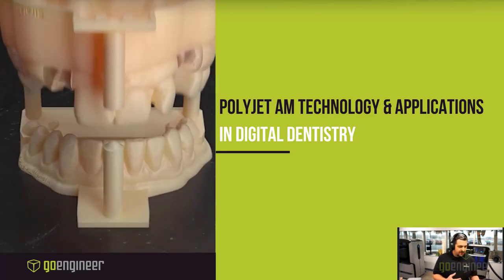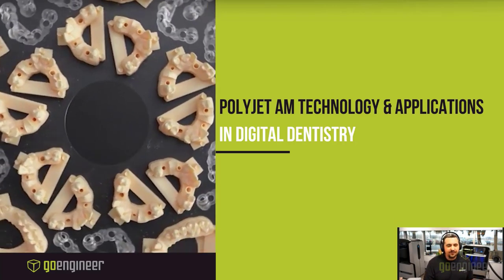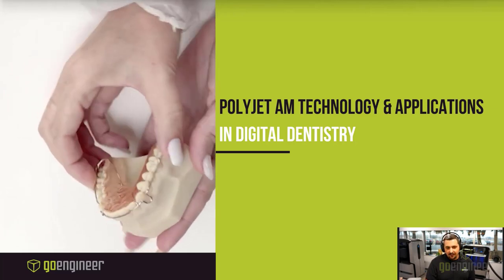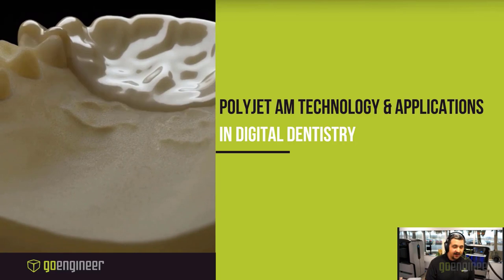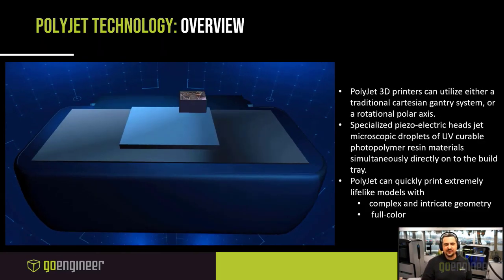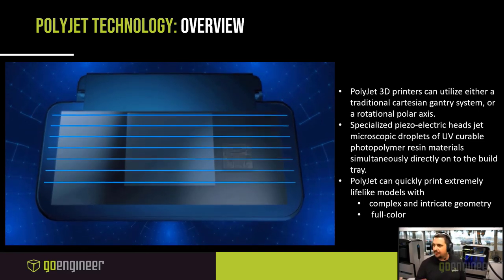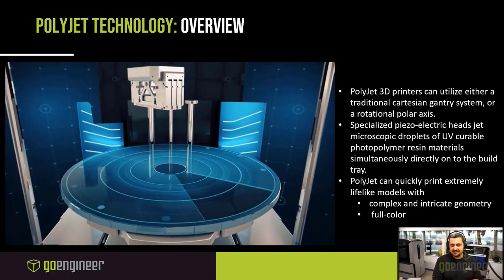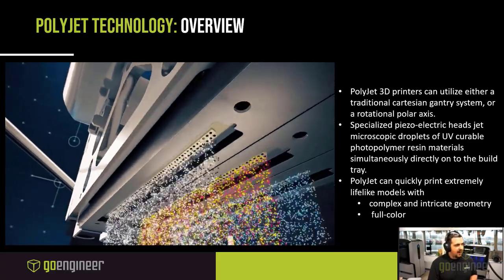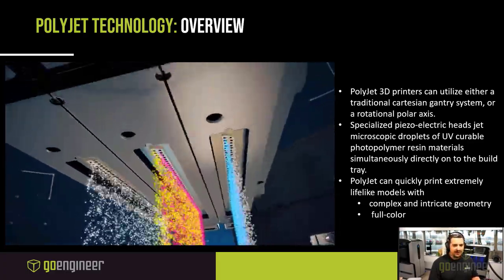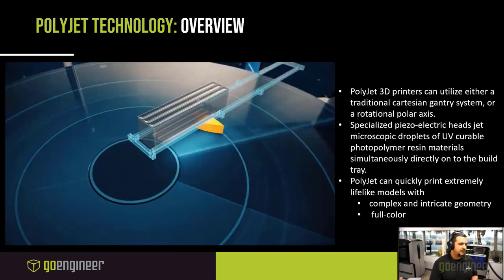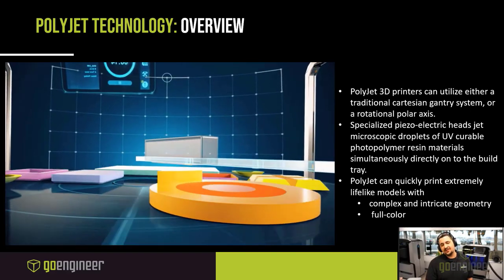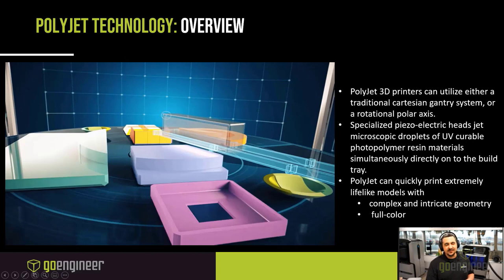PolyJet 3D printers can utilize either a traditional Cartesian gantry system or a rotational polar axis. The J5 DentaJet and all PolyJet systems use specialized piezoelectric heads that jet microscopic droplets of UV-curable photopolymer resin simultaneously and directly onto the build tray. PolyJet can quickly print extremely lifelike models with complex, intricate geometry as well as full color.